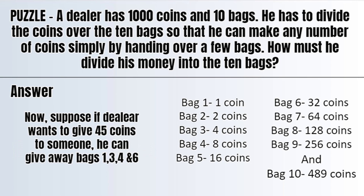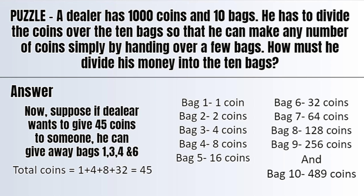Suppose if the dealer wants to give 45 coins to someone, he can give away bags 1, 3, 4, and 6. Bag 1 contains 1 coin, bag 3 contains 4 coins, bag 4 contains 8 coins, and bag 6 contains 32 coins. If you add all these 4 bags' coins, it will give you 45.